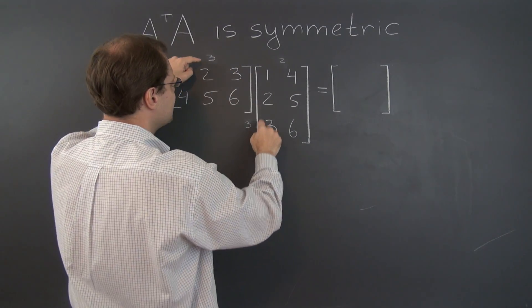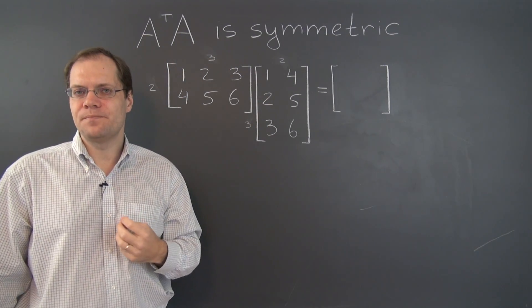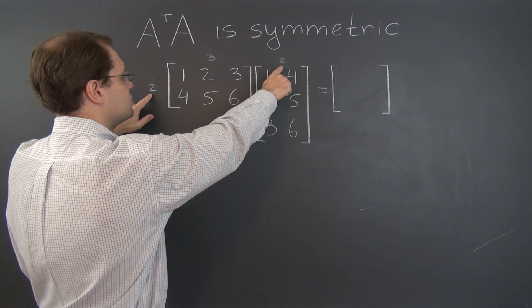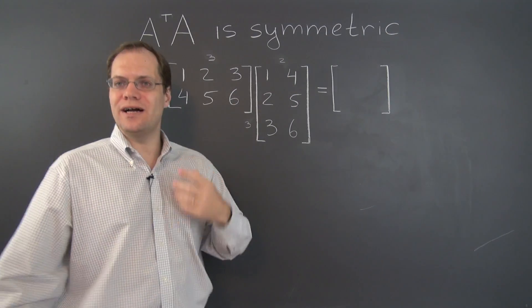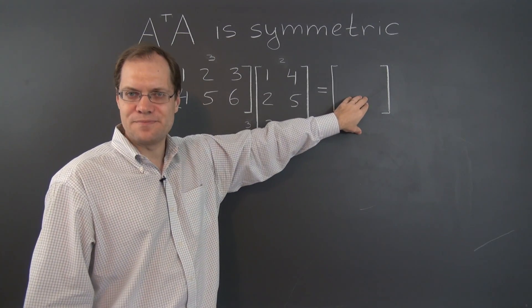And the inner dimensions necessarily match, so the product is always compatible. But the outer dimensions, 2 and 2, match as well, so the resulting matrix is always square. Good start.